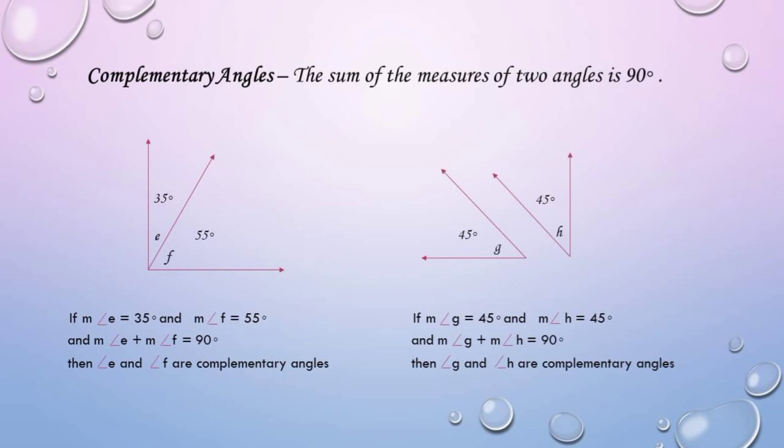Then we have the second example. If the measure of angle G is 45 degrees and the measure of angle H is 45 degrees, and the measure of angle G plus the measure of angle H is equal to 90 degrees, then angle G and angle H are complementary angles.